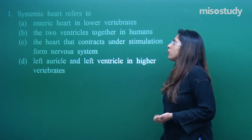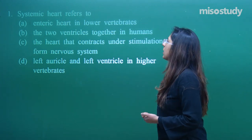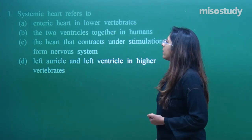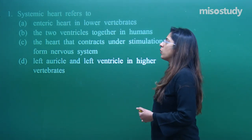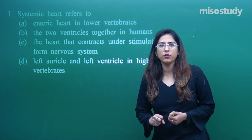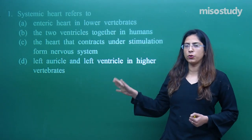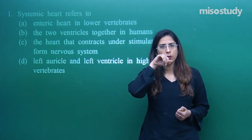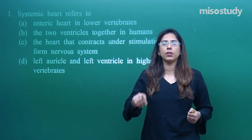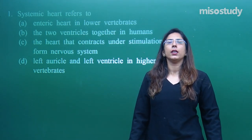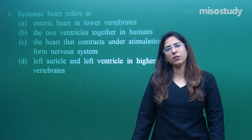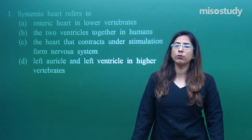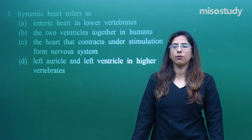The first question indicates: systemic heart refers to. First of all, there are two types of circulations. One is systemic circulation and the other is pulmonary circulation.